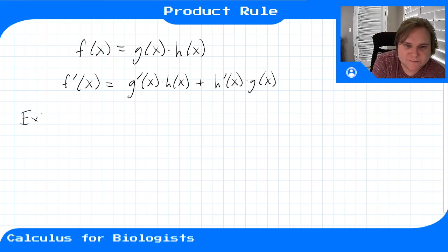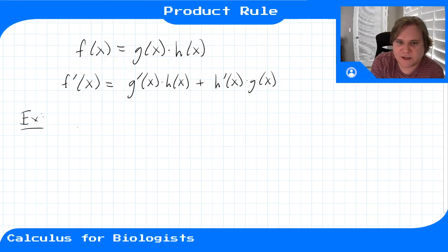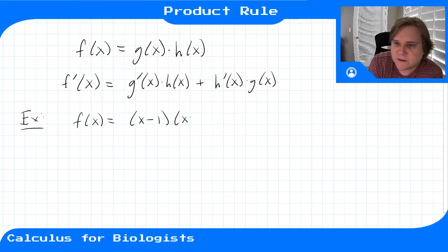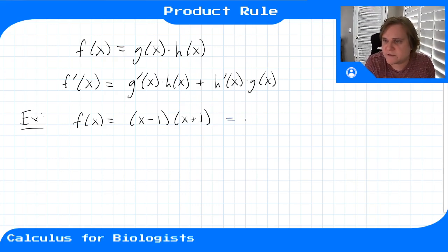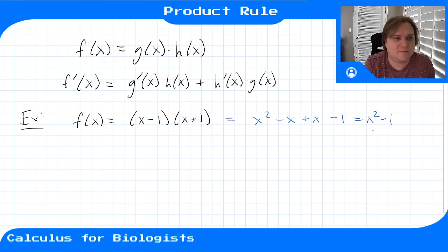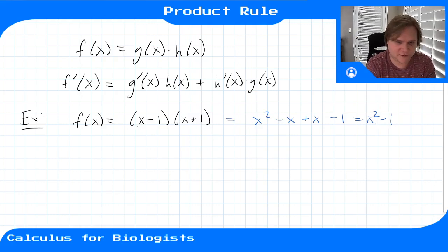An example of that: let's say we have the function f of x equals x minus 1 times x plus 1. We can factor this out — this gives us x squared minus x plus x minus 1, which gives us x squared minus 1. We know how to take the derivative of that using the power rule and the sum rule. So let's compute it using the product rule.